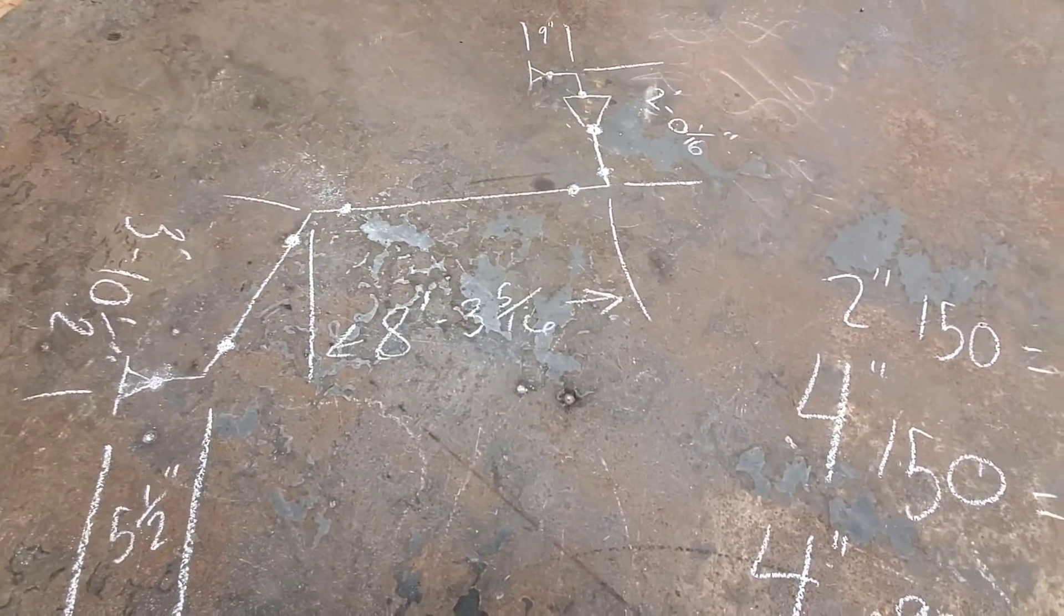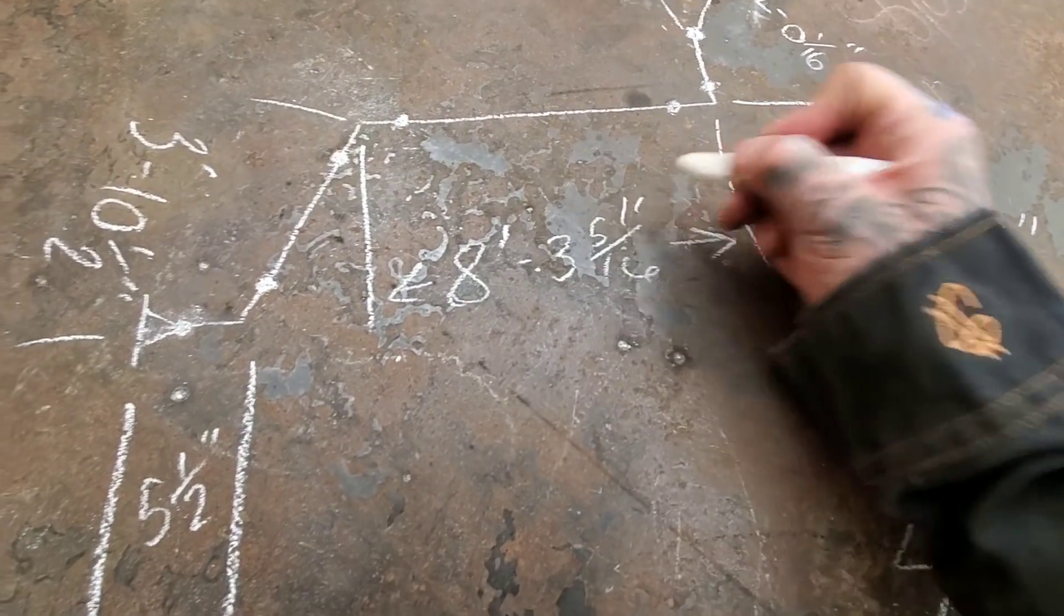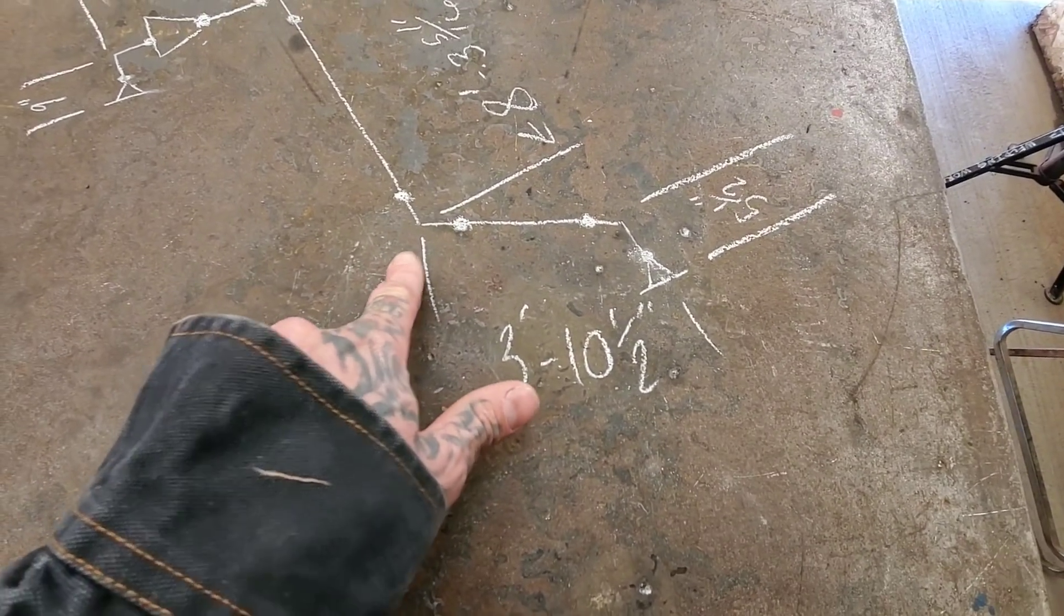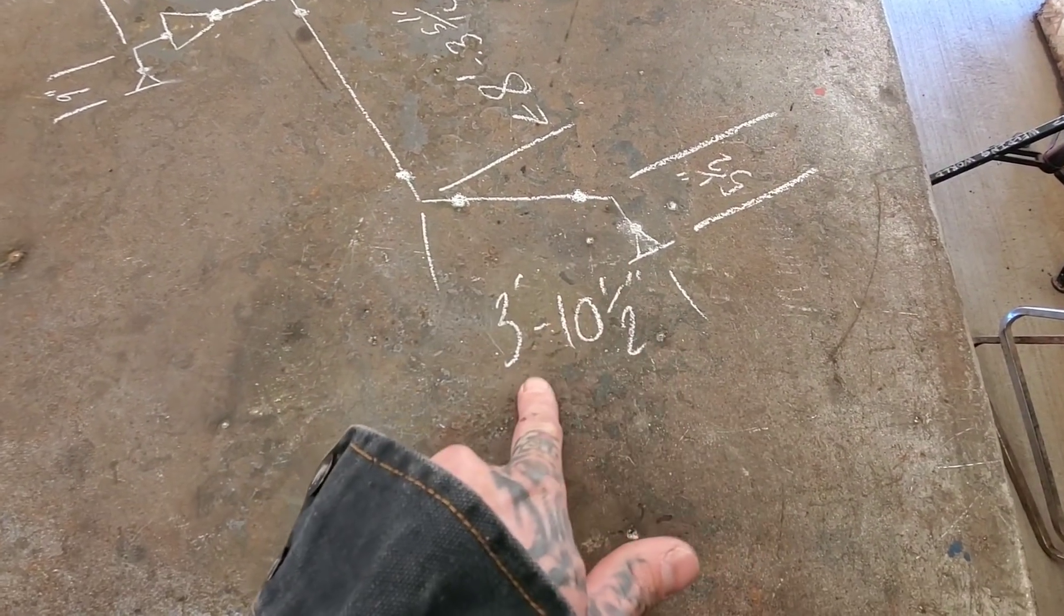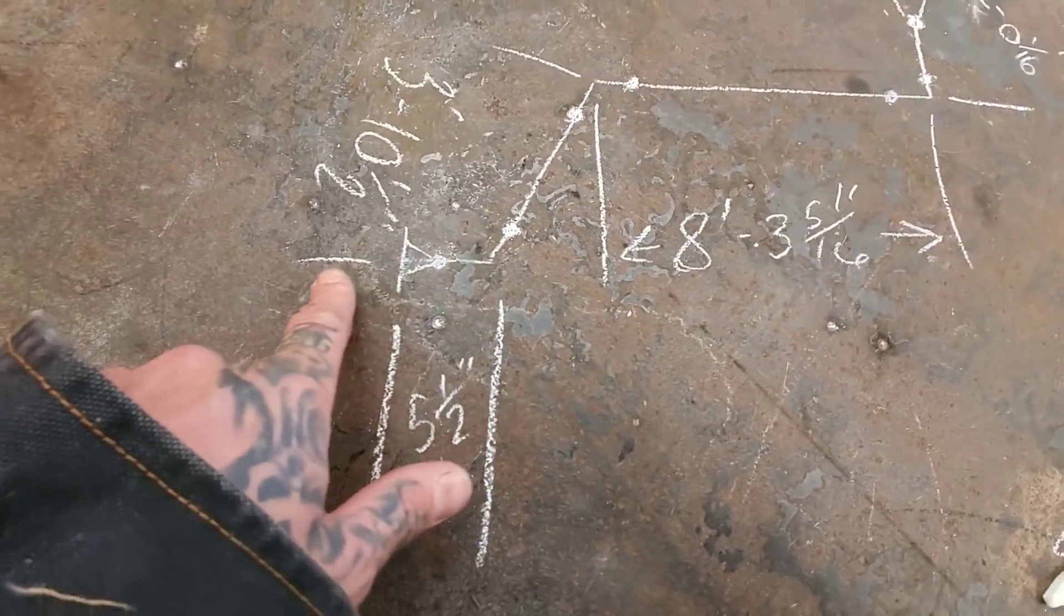I forgot that inch number on there so let me verify that. That is three and five sixteenths of an inch. Over here we have from center to center three feet ten inches and a half. Now remember this is two inch pipe down here.